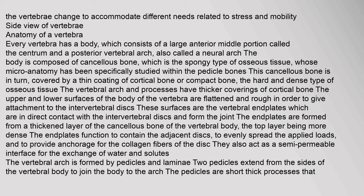The upper and lower surfaces of the body of the vertebra are flattened and rough in order to give attachment to the intervertebral discs. These surfaces are the vertebral endplates, which are in direct contact with the intervertebral discs and form the joint. The endplates are formed from a thickened layer of cancellous bone of the vertebral body, the top layer being more dense. The endplates function to contain the adjacent discs, to evenly spread the applied loads, and to provide anchorage for the collagen fibers of the disc. They also act as a semi-permeable interface for the exchange of water and solutes.